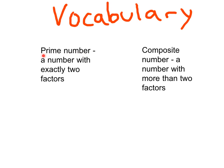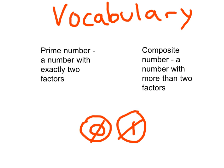A prime number is a number with exactly 2 factors. A composite number is a number with more than 2 factors. Go ahead and write those two definitions down for yourself, somewhere around where you write vocabulary. I'll explain those to you in a little bit.